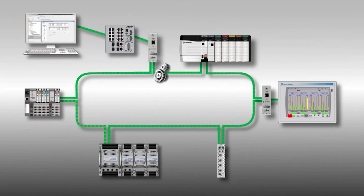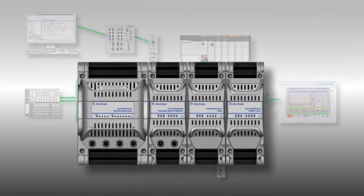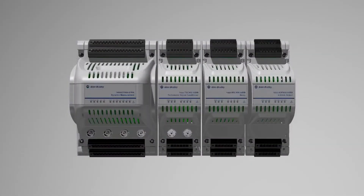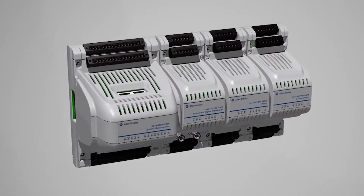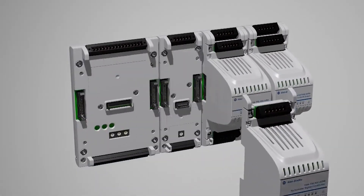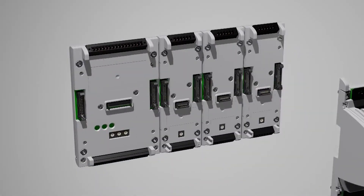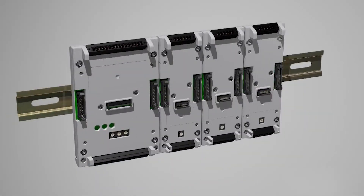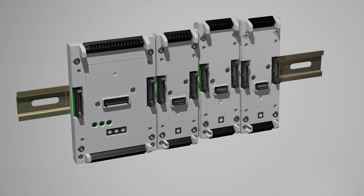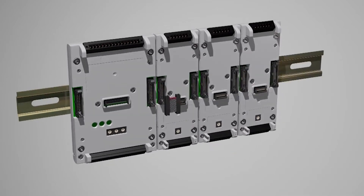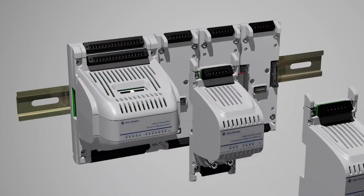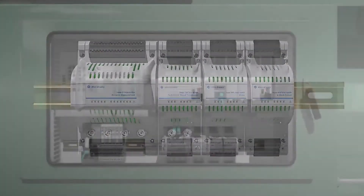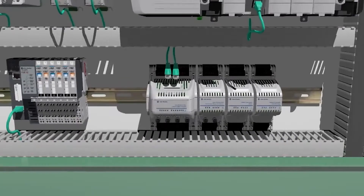Being an Allen Bradley product, integration is simple. The program then needs to be updated to the controller. The solution offers a control communications module and additional expansion options to suit your application's needs. Dynamics 1444 modules are mounted on DIN rail and sit within your control panel. The product offers dual Ethernet ports supporting device level ring network topology.